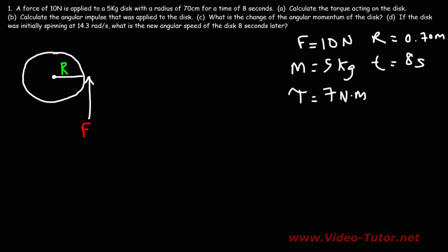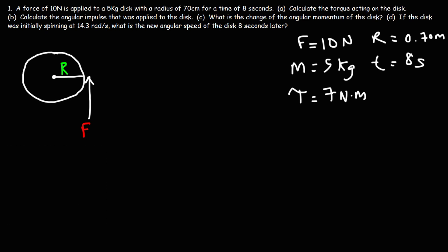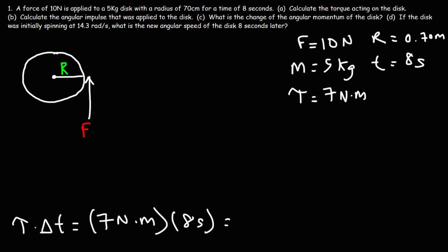Now let's move on to part B: calculate the angular impulse that was applied to the disc. Just as linear impulse equals force multiplied by time, angular impulse is equal to the torque multiplied by the time. We have a torque of 7 newton meters applied for 8 seconds, so the angular impulse is 56 newton meter seconds.